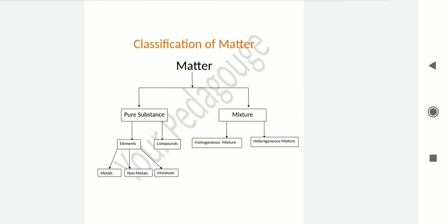Metals, which make sounds and have the capacity of transferring electric current through them, are known as metals — for example, silver, zinc, etc. Non-metals are those elements which have a tendency to form negative ions, to gain electrons. For example, hydrogen, oxygen, sulfur, etc.